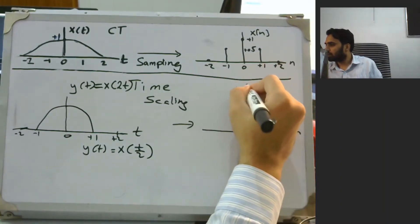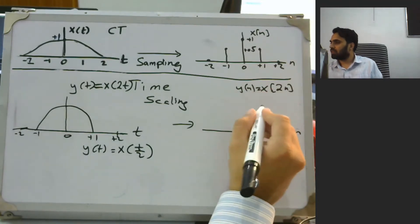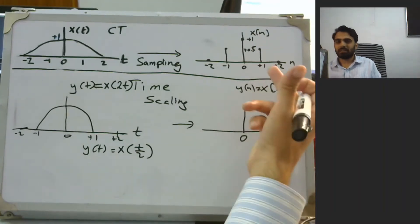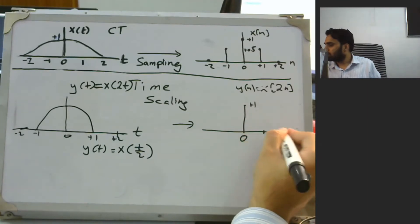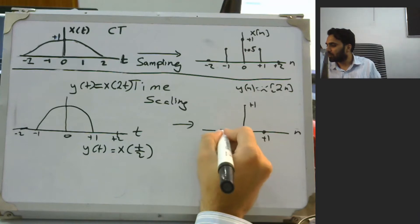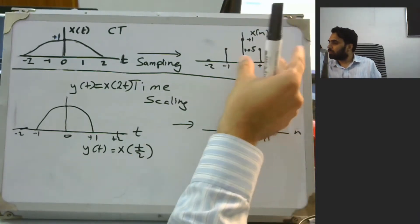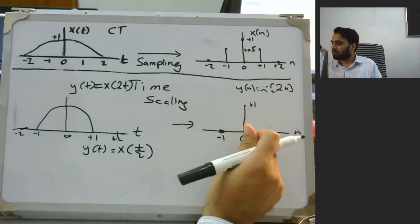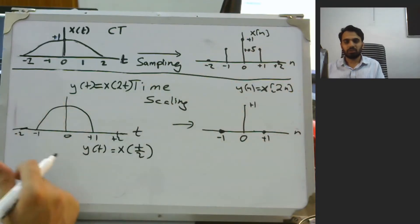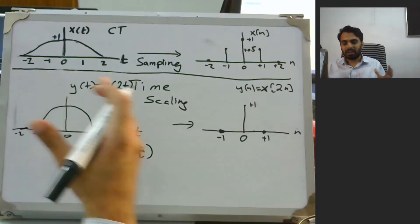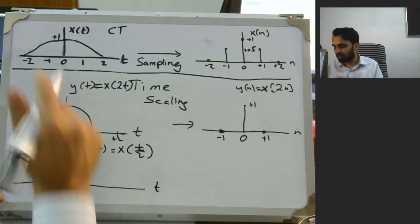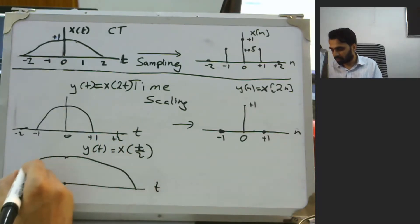For discrete-time compression, if y[n] = x[2n], the value at n=0 remains plus 1. The value at n=2 in the compressed signal relates to plus 1 in the original. However, the value at plus 1 in the original would appear at 0.5 in compressed time, but since discrete-time only uses integer values, that value is discarded and some information is lost. On the other hand, for expansion, y(t) = x(t/2) means the signal is simply expanded in time — what was at 0 is expanded out further, for example to plus 4.